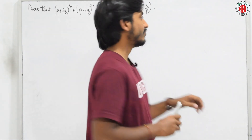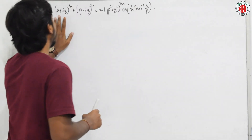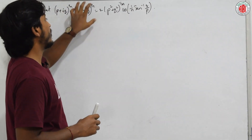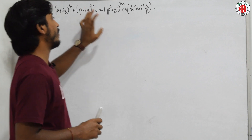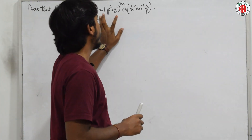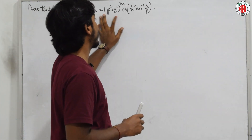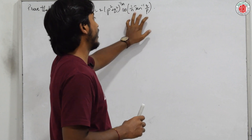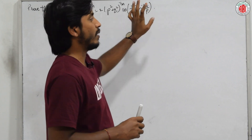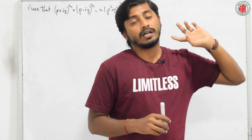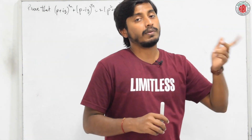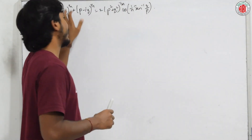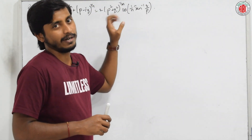The question given here is: (p + iq)^(1/n) + (p − iq)^(1/n) = 2(p² + q²)^(1/2n) · cos(1/n · tan⁻¹(q/p)). The problems we did previously were in forms like (1 + i)^n or (1 + i)^(2n). Here, instead of a simple form, they gave a generalized form.